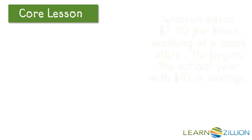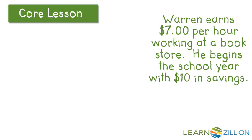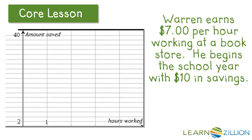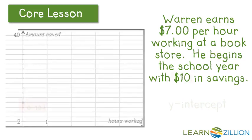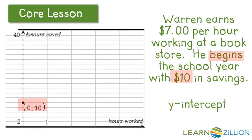Let's revisit our scenario. Warren earns $7 per hour working at a bookstore, and he begins the school year with $10 in savings. We have our graph here with hours worked on the x-axis and amount saved on the y-axis. The y-intercept is 10 — since the y-intercept is also the initial value, he begins with $10, so we find that point first. The minimal calculation is with that point: (0, 10). From that point, we're going to count out two more points using our slope.